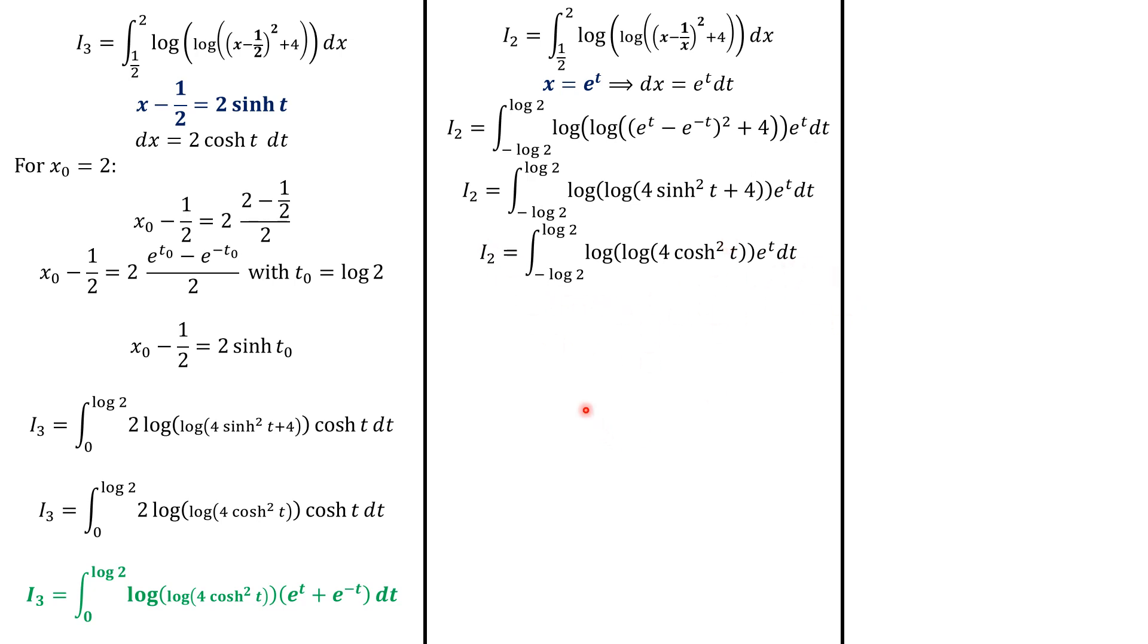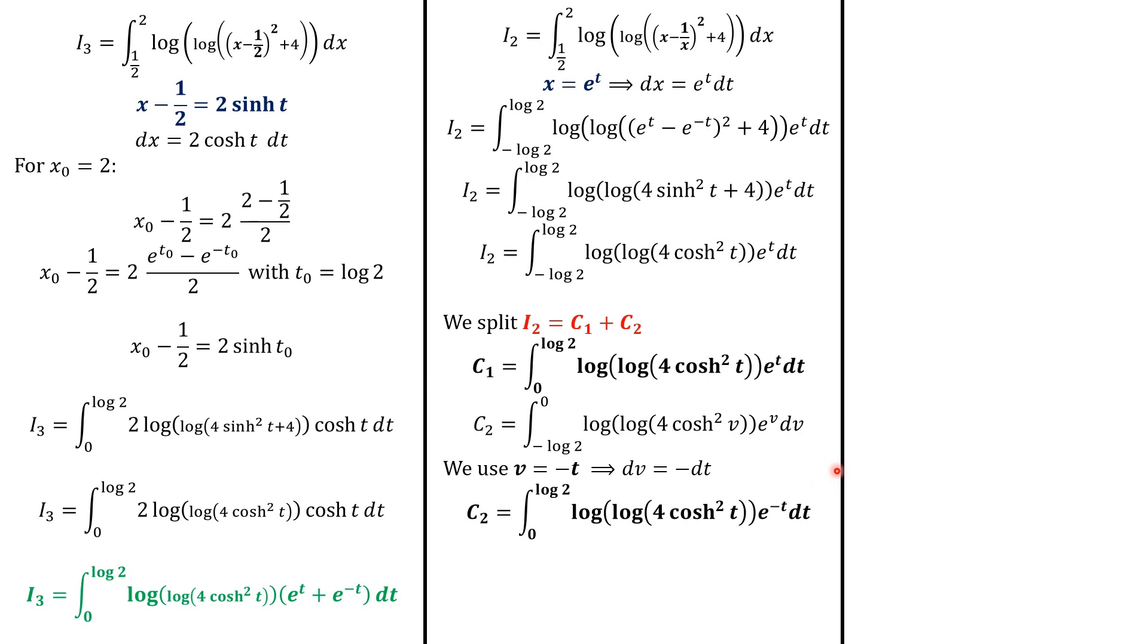So we turn to I2. So we want this to be also 2 times sinh of t. So this can be achieved using x equals e to t. And then dx is e to t dt. So we replace here. So we have integral from negative log 2 to log 2. And then we replace x which is e to t. And this is e to negative t plus 4. And dx is e to t dt.